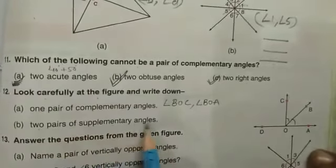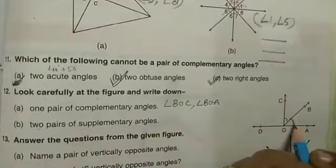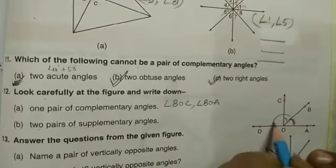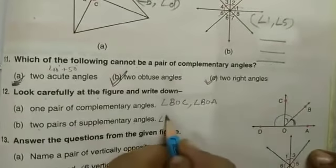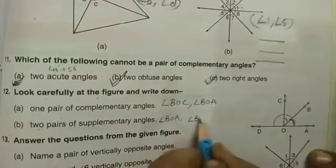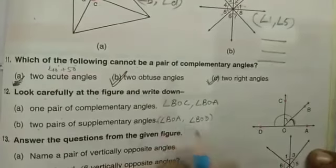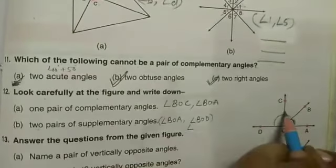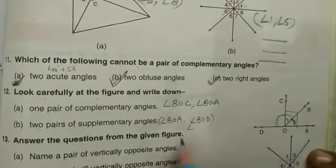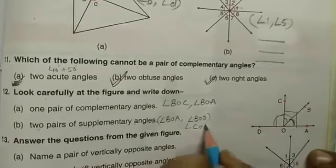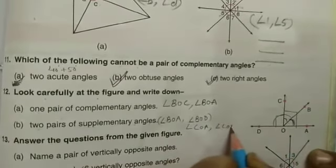Two pairs of supplementary angles. If I take this angle, another should be like this. That is, angle BOA and angle BOD. Second pair, what I can take? This one and this one. Angle COA and angle COD.